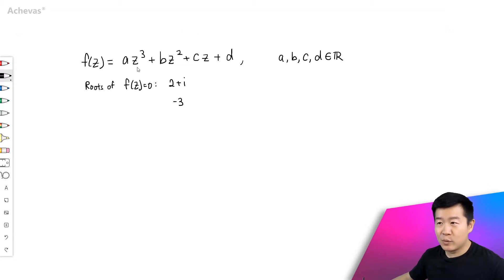We are given the function f(z), which is this one, and the coefficients a, b, c, d, they are also given to us as real numbers.